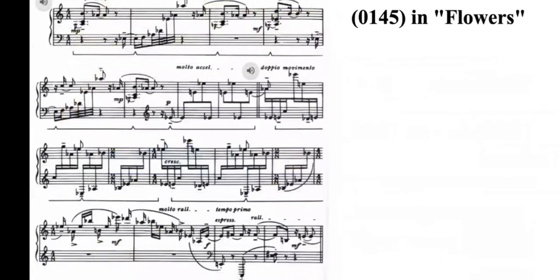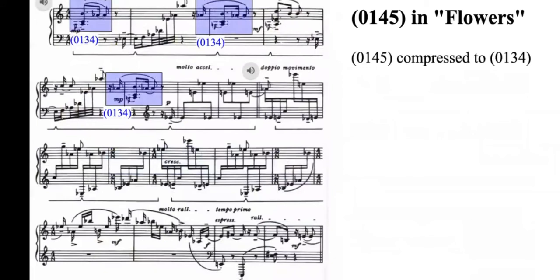Concerning the usage of 0145 in the third movement Flowers, the traits of 0145 are not as apparent. The opening measure presents 0134, Ab, A, B, C instead of 0145. However, 0134 can be viewed as a compressed 0145. Let's have a listen.